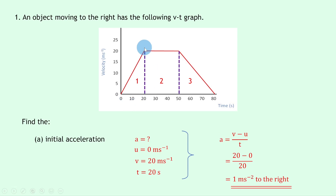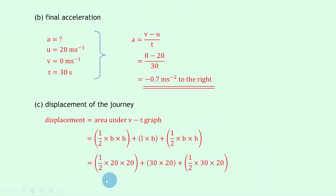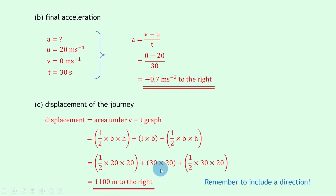Looking back at the graph to put the numbers in: for shape one, ½ × 20 × 20; for shape two, 30 × 20 (from t = 20 to t = 50); and for shape three, ½ × 30 × 20 (from t = 50 to t = 80). So the total is (½ × 20 × 20) + (30 × 20) + (½ × 30 × 20) = 1100 meters to the right.